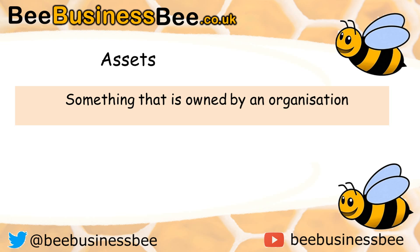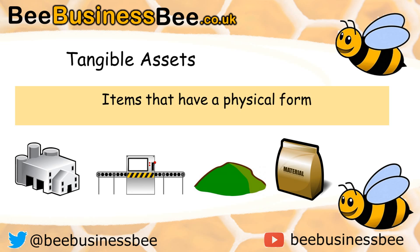Assets are items which the business owns, and there are different types of assets that exist. We have tangible assets — these are items that have a physical form, or in simpler terms, items that you can touch. They can be current or non-current. For example, your building, your machinery, your land, or your raw materials are all tangible assets.